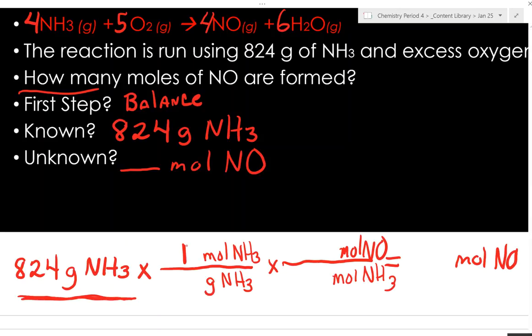What has the units grams per mole? Molar mass. What does one mole of NH3 weigh? 17. From our balanced chemical equation, what is the ratio of NO to NH3? Four to four. Can we simplify that? One to one. Can we cancel any units here? Moles of NH3 and grams of NH3.